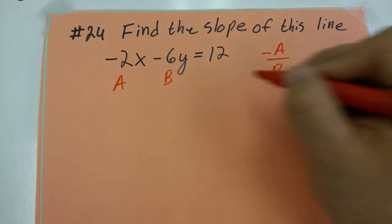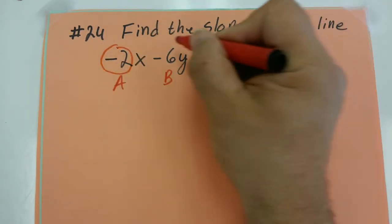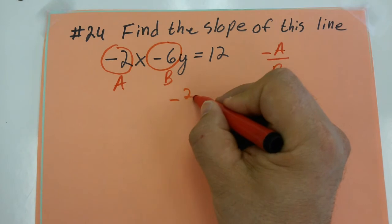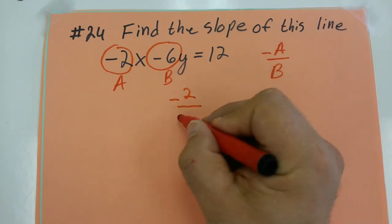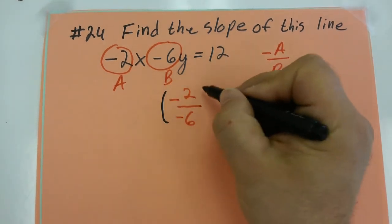When I'm training my students to find the slope quickly, I say you take this number and put it on top of this number. So that gives me negative 2 on top of negative 6. And then you throw a negative in front.